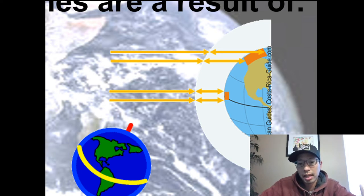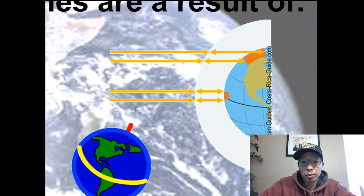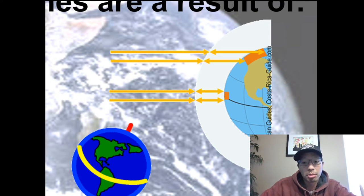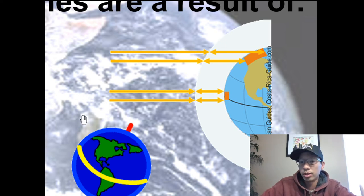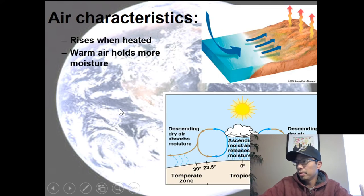Wind is caused by a difference in heating. As the heated air moves from the equator toward the poles, it brings warmth to those areas. If that wind were to stop — if there were no air movement between the equator and the poles — the upper parts of the northern and southern hemispheres would be extremely cold. Air circulation brings heat and actually warms up the northern and southern regions, making it more hospitable for us.